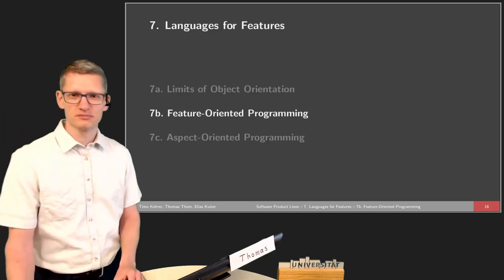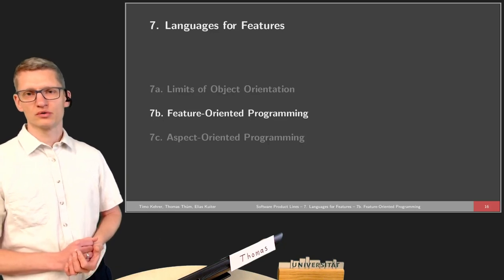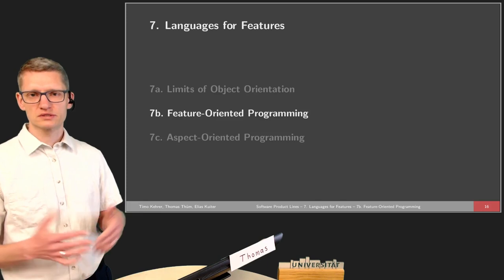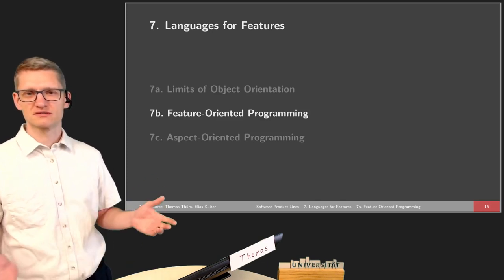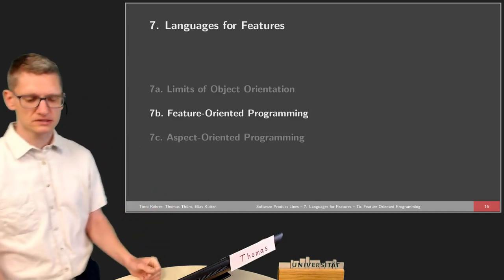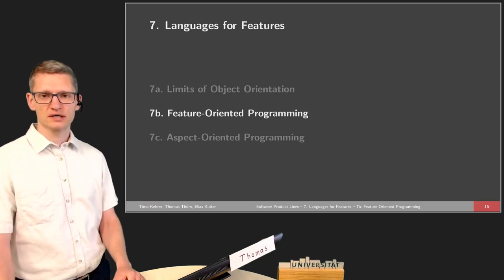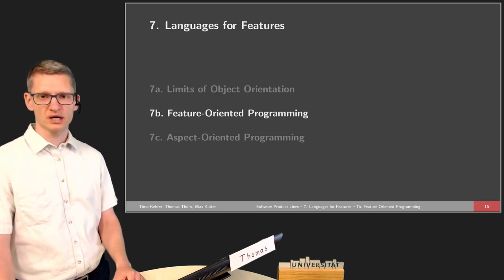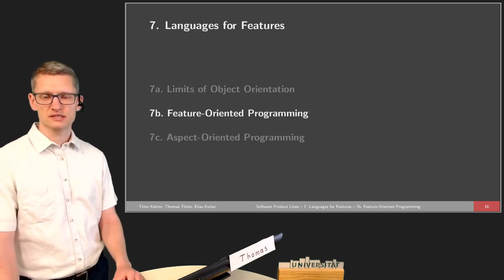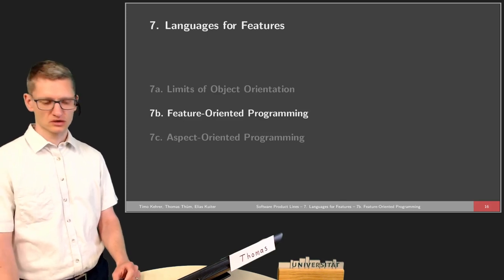Welcome back to the second part of the lecture. We will now talk about feature-oriented programming and feature modules. This name already suggests that there is some connection to features and to product lines. We will talk about feature-oriented programming in this part and aspect-oriented programming in the other part. These are the two techniques that we discuss in this course that mainly focus on how to modularize cross-cutting concerns.